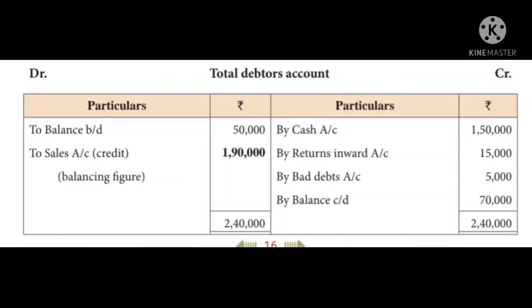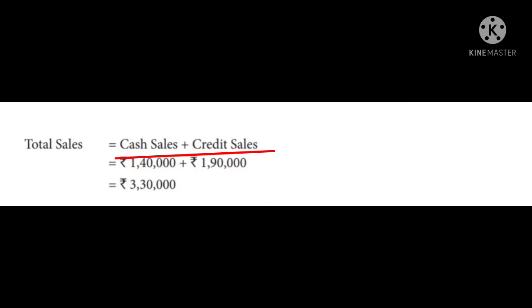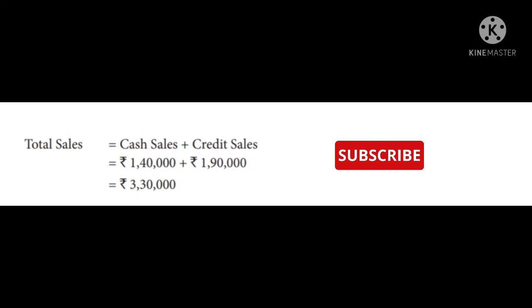Now we calculate total sales: Cash sales plus credit sales. Cash sales: 1,40,000; plus credit sales: 1,90,000. So total sales equals 3,30,000.